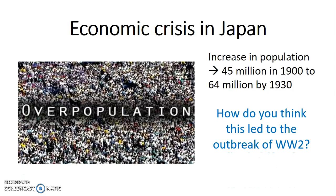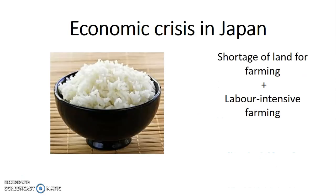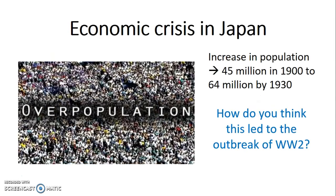How did this lead to the outbreak of World War II? If there are more people, they need more food and more resources. If they are unable to find those resources in Japan, they go outside of their country. So the economic crisis in Japan actually encouraged the Japanese to pursue an expansionist policy.